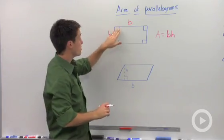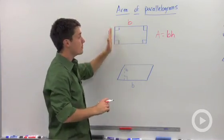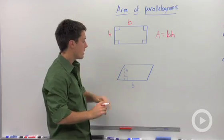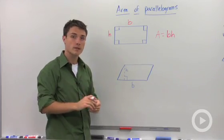So the area of a rectangle is going to be your base length times its height. But how does that apply for a parallelogram that's not a rectangle?